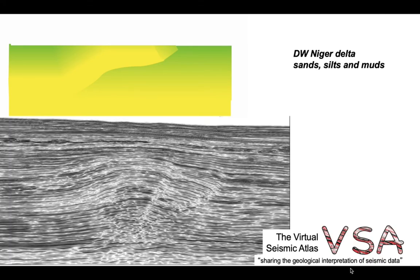We can see this manifest in the deep water Niger Delta. The rocks here are sands, silts, and muds, and the compaction state of these rocks — which controls seismic velocity — is simply depth-dependent. Consequently, the seismic velocity will be smoothly varying with depth and the seismic image is relatively simple.